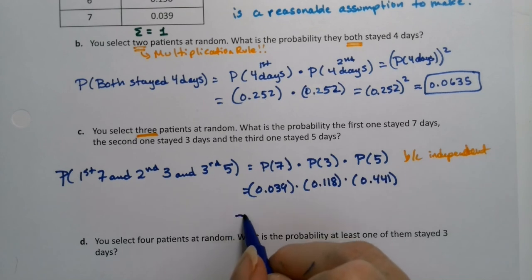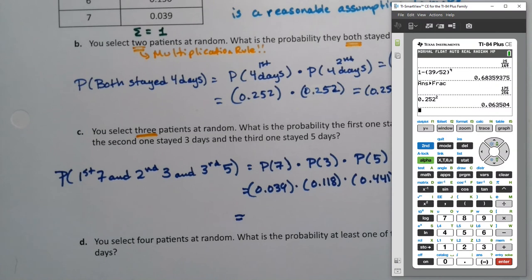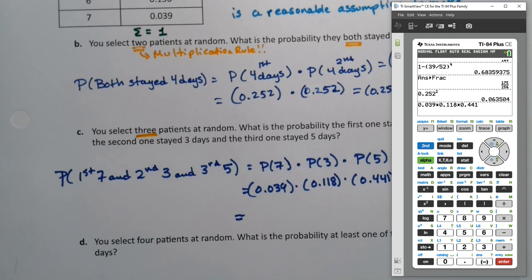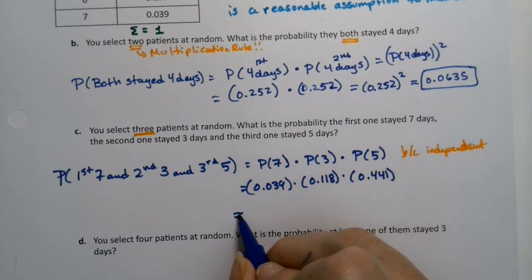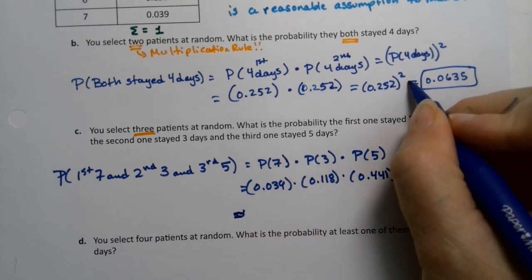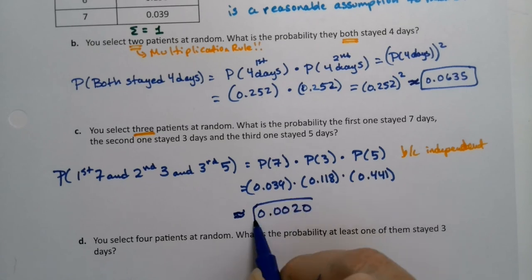So I will multiply those values with my calculator. 0.039 times 0.118 times 0.441. And there you have it, 0.0020. And of course it's an approximation. So at that point I should round. And there we have it.